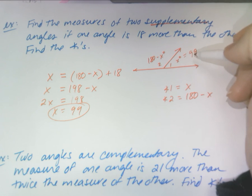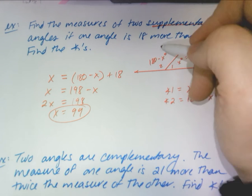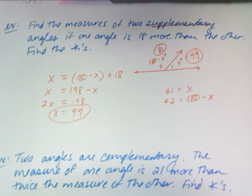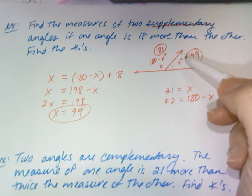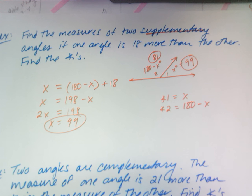Then what would this angle be? Well, what's 180 minus 99? That would be 81. Of course, I drew them differently up here on the picture, but it doesn't matter because it would be the same either way. One angle would be 99, the other one would be 81, and they are supplementary to each other.